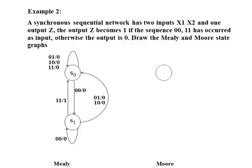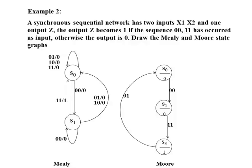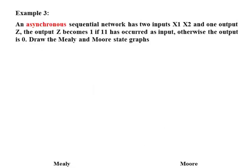And the same steps apply in the Moore state graph. When the network receives 0, 0, it goes to S1 and the output is 0. And when the network receives 0, 0 followed by 1, 1, the output will change to 1. Now we check the possible inputs in the same way.